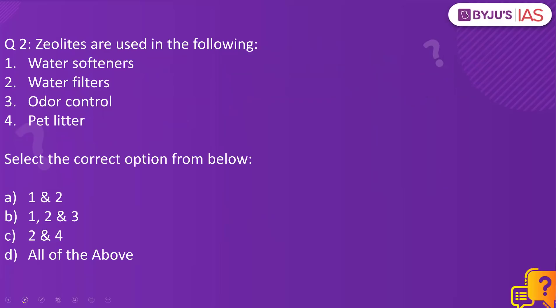Zeolites are used in the following: as water softeners, water filters, odor control, and pet litter. Select the correct option from below.